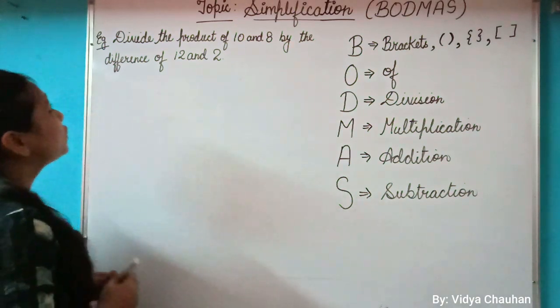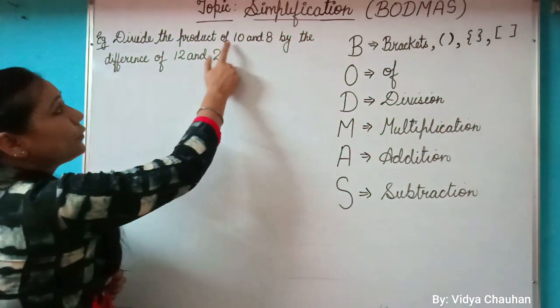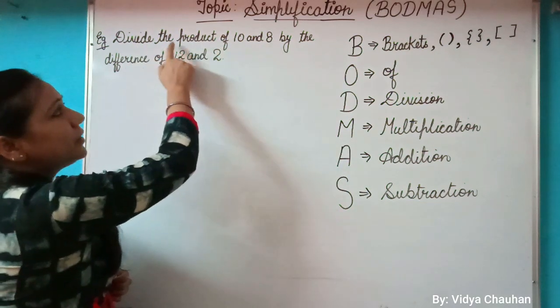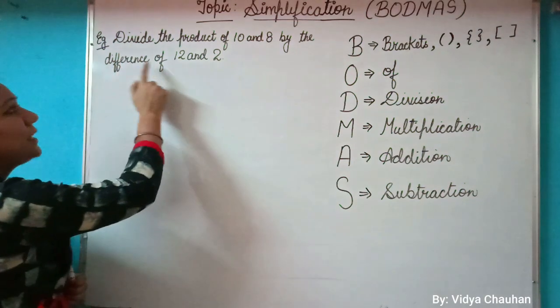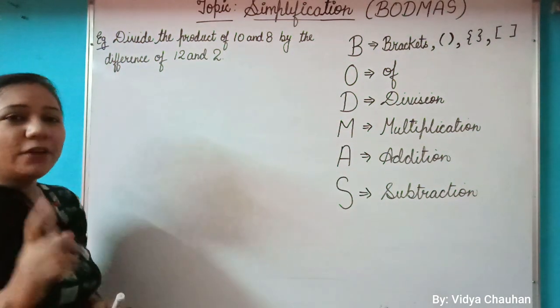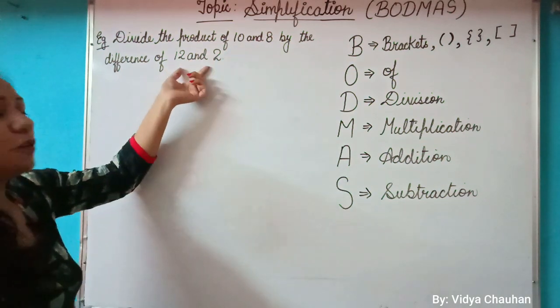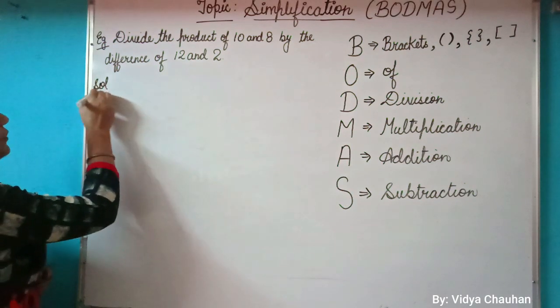Here the question is: divide the product of 10 and 8 by the difference of 12 and 2. So we have to divide the product of 10 and 8 by the difference of 12 and 2. In the first step of solution, very first we